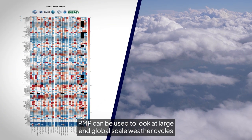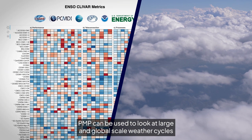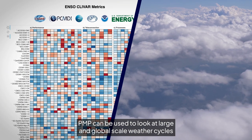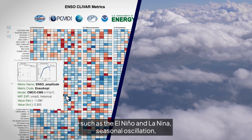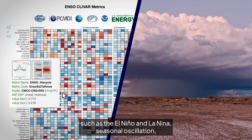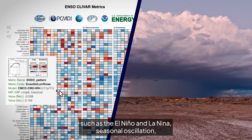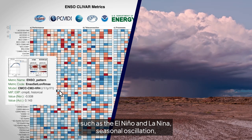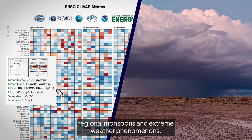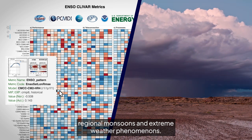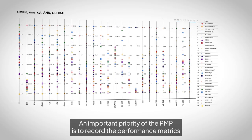PMP can be used to look at large and global-scale weather cycles, such as El Niño and La Niña, seasonal oscillation, regional monsoons, and extreme weather phenomena.